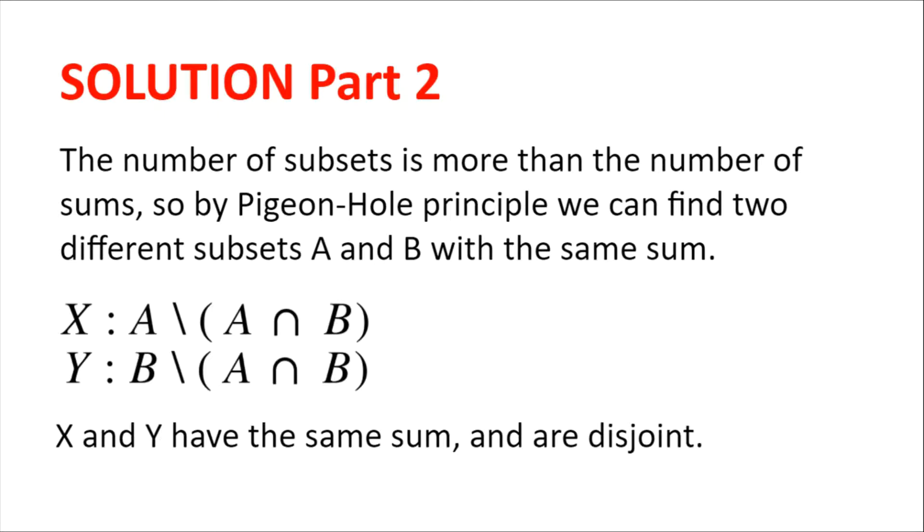Now, these subsets A and B are not necessarily disjoint. However, we can create two new subsets, X and Y, which are disjoint. We take X as all the elements in A, apart from the intersection of A and B, and let Y be all the elements in B, apart from the intersection of A and B.